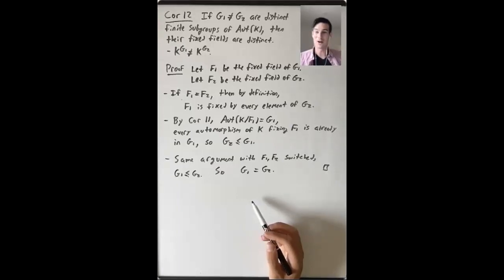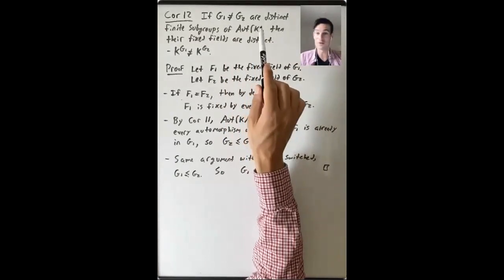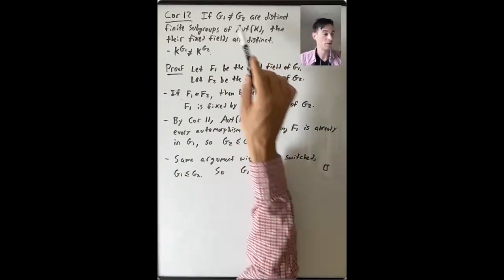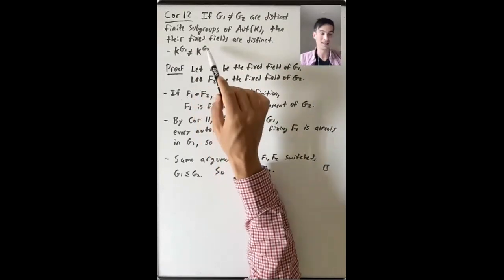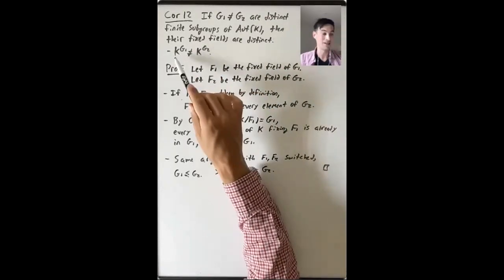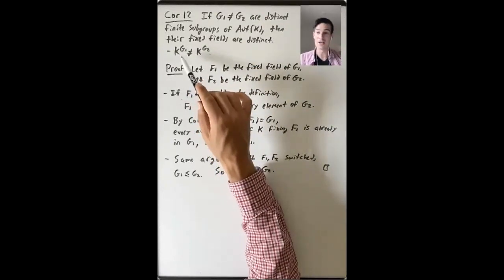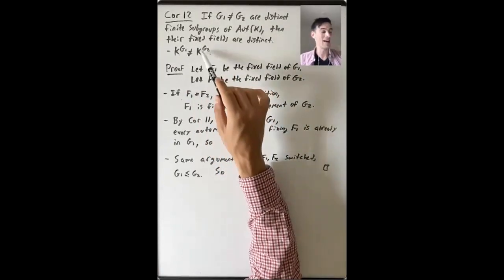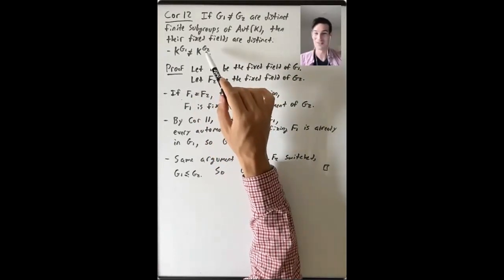Let's state and prove the final corollary of this video: if G1 and G2 are distinct finite subgroups of the group of automorphisms of a field K, then their fixed fields are distinct. So if G1 is not equal to G2, then the fixed field of G1 is not equal to the fixed field of G2.